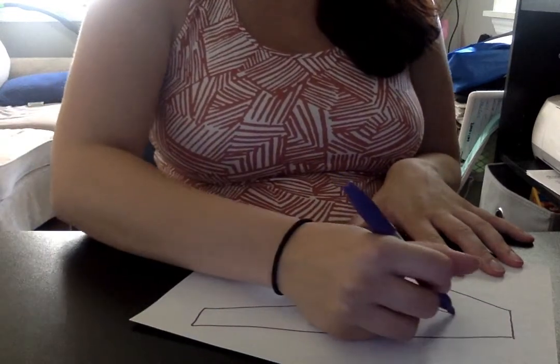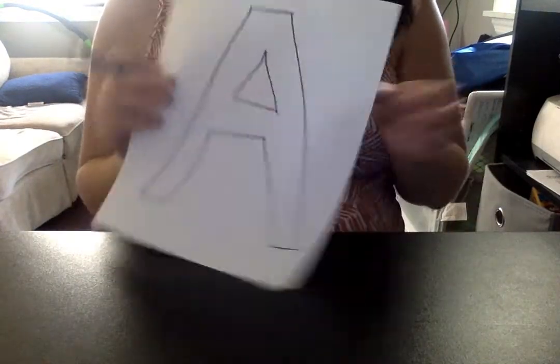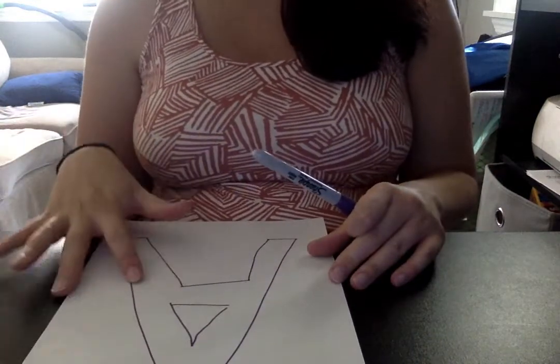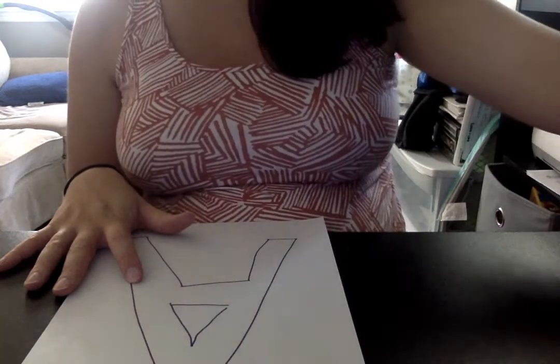If you can't do that, I mean it's not perfect, it doesn't have to be, but if you can't do that you can also just draw the line and have the child glue the pieces on the line.